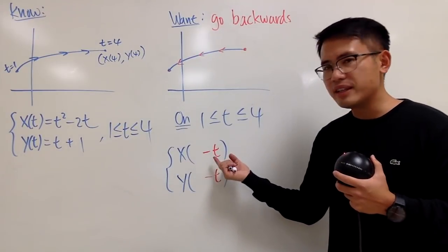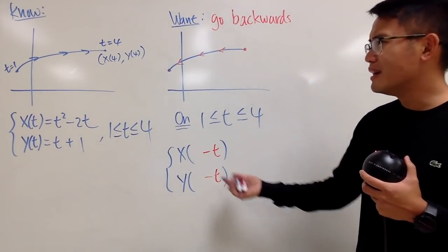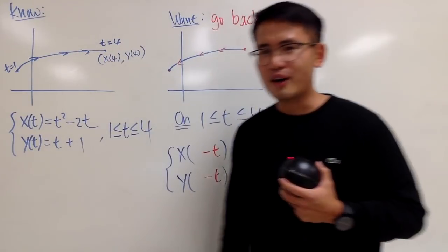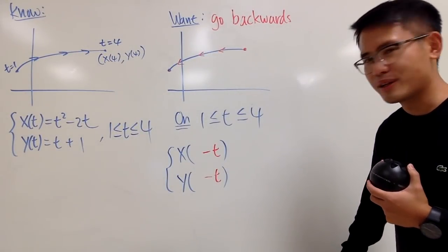In fact, if you have x of negative 1 and y of negative 1, it's not even on this curve at all. So, hmm, that's not that good.